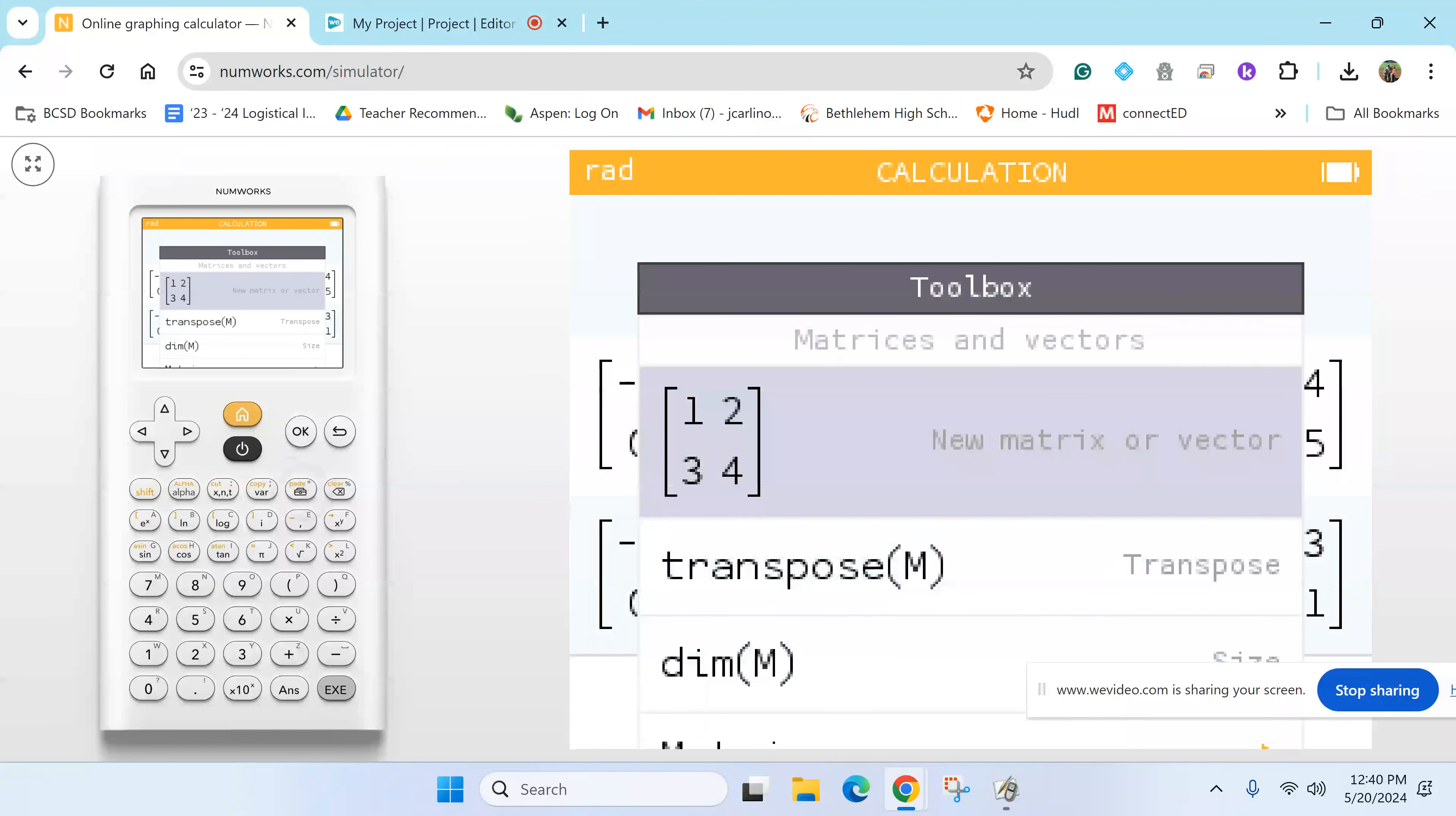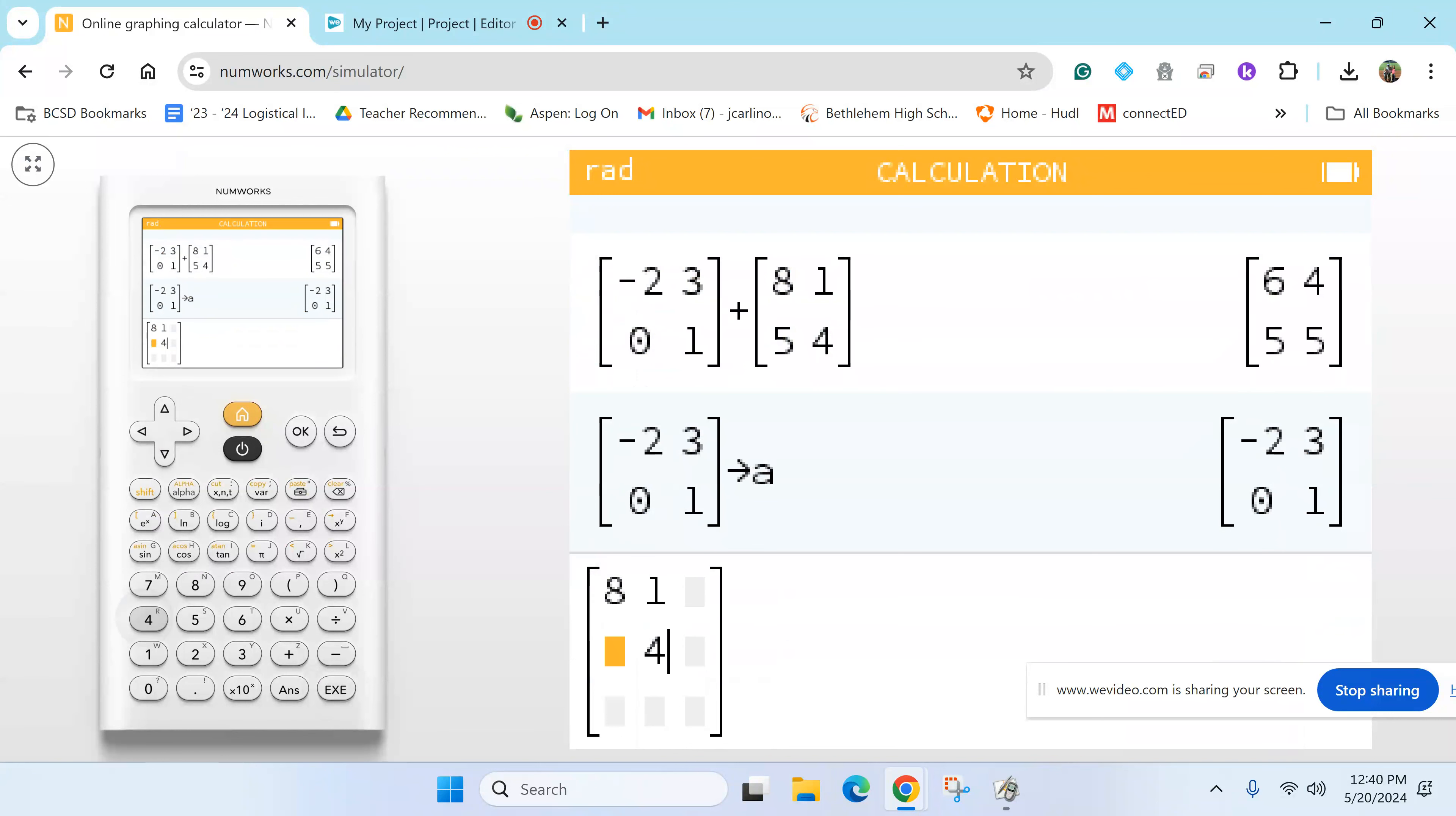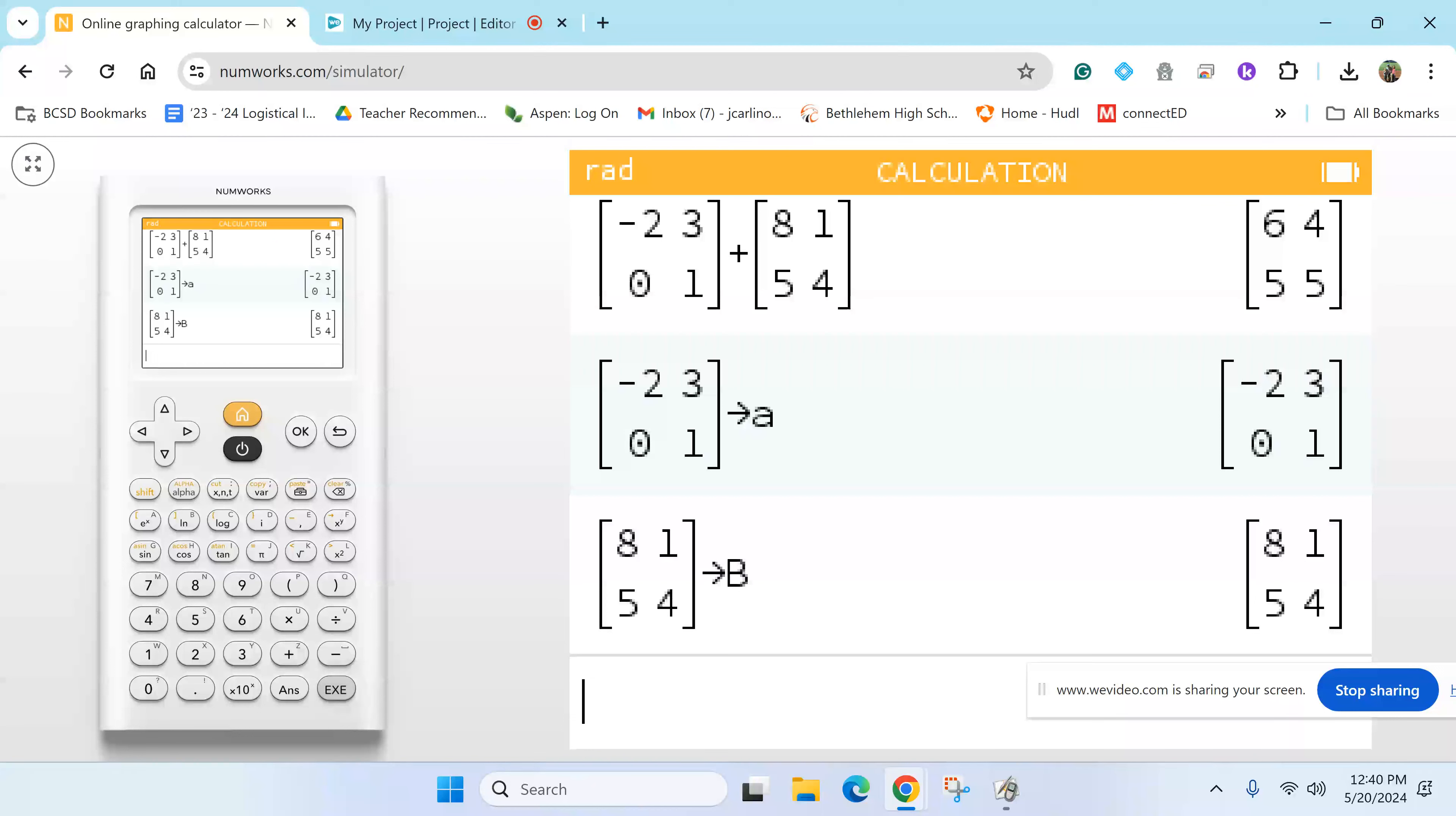Now it'll store that in for A. Now you make it for matrix B, so matrix B - eight, one, four, and five. Go over again, store, hit your arrow button, store that in for matrix B. Now alpha B.